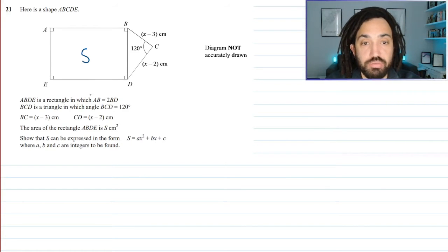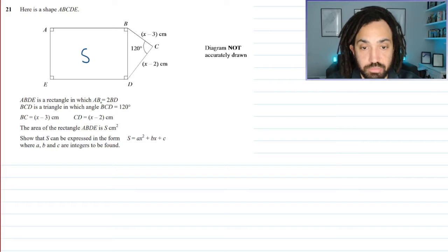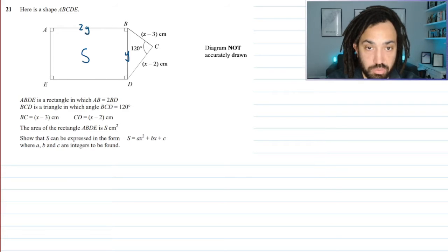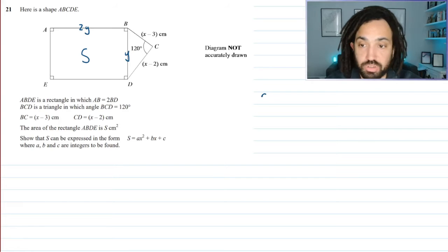Okay, well, I don't know the side lengths yet of this rectangle. So what I'm going to do is I'm going to just call the smaller one, which is BD, I'm going to call that Y. And therefore this one at the top would be 2Y. So straight away I've got an expression for my area, which is going to be 2Y times Y, which is 2Y squared.